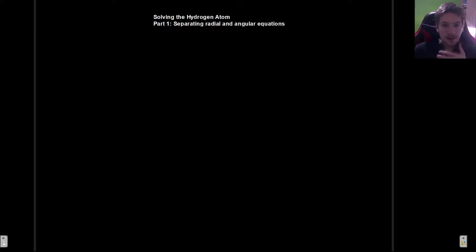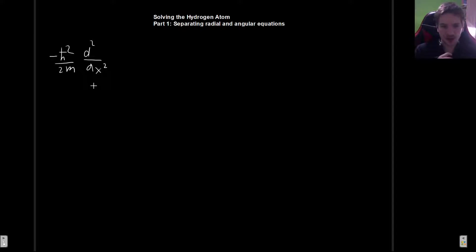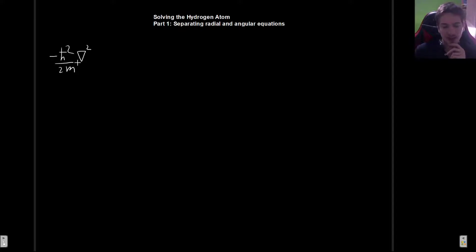How do we begin solving this? First we must write down the Schrödinger equation, but this time it's not going to be just a second derivative with respect to x. We are in three dimensions, so we need to generalize to three dimensions. What this is exactly depends on our choice of coordinates, but in general we write it as the Laplacian, which replaces what was before just a single derivative.